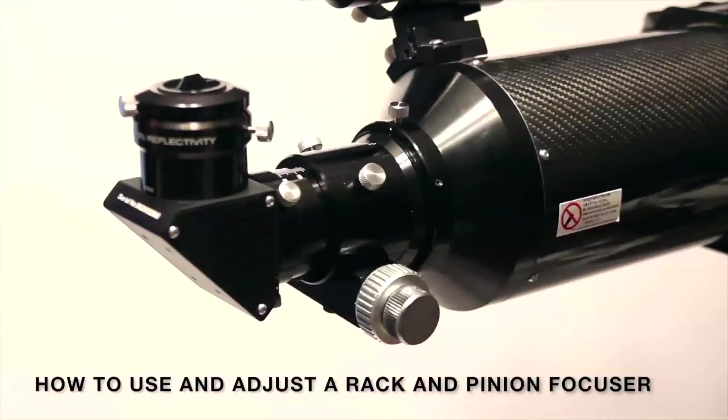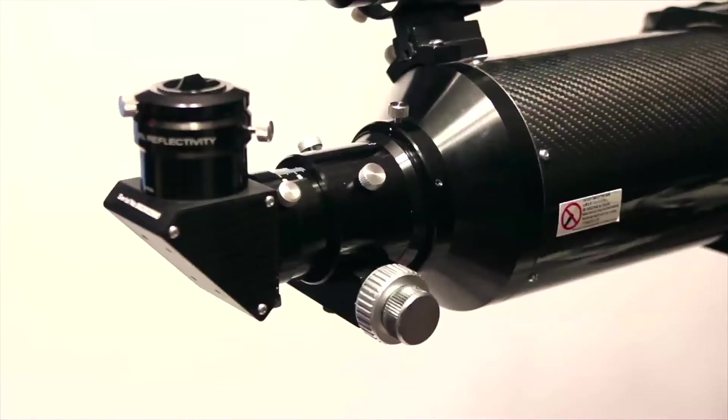Today I'm going to show you about the rack and pinion focuser on the 80 millimeter ED Apo essential series, the 102 ED Apo essential series, the 127 ED Apo essential series. Those are all white tube scopes, and the 127 carbon fiber and the 152 carbon fiber. All of these take the rack and pinion focuser and I'm going to do a demonstration of how that focuser works.